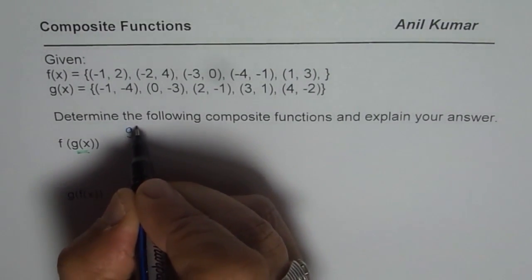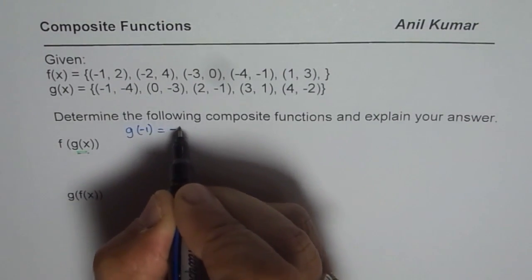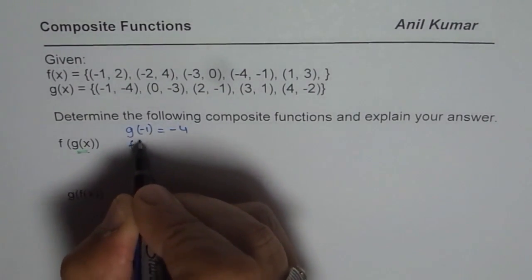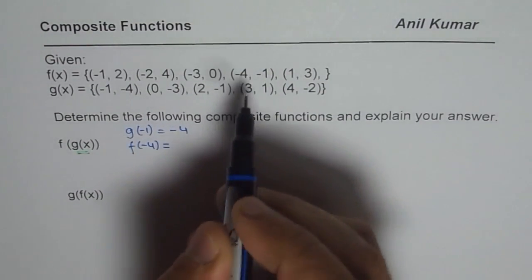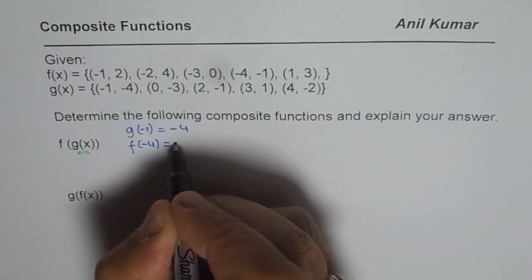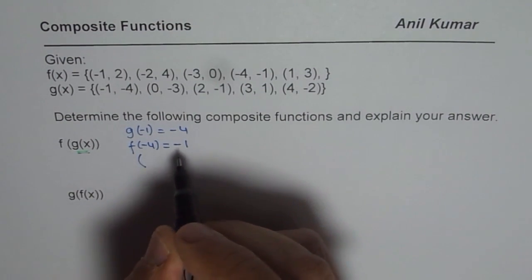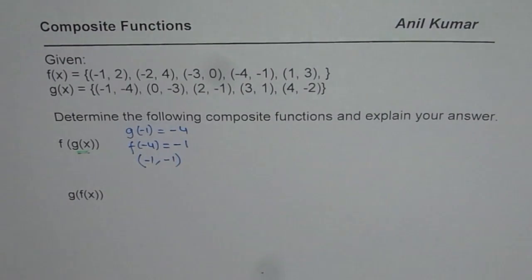So first we will find what is g of minus 1. g of minus 1 is minus 4. Once we get minus 4 here, then we say what is f of minus 4 equals to? f of minus 4 is minus 1. And therefore, we get the coordinate point that for minus 1 input, the output is minus 1.